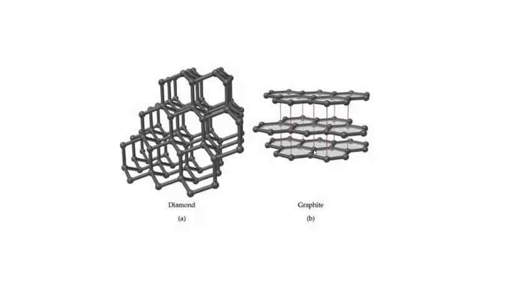But in graphite, every carbon is only covalently bonded to three other carbons, which means that there is one free electron on every carbon which exists in between the layers. It's a much weaker bond that holds the different layers together, and these electrons are free to move between the layers, actually making graphite a good conductor.